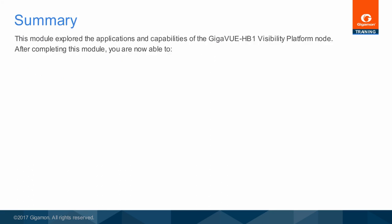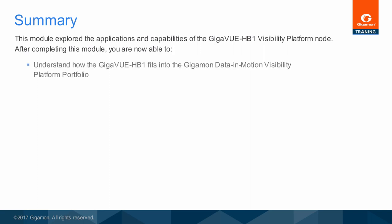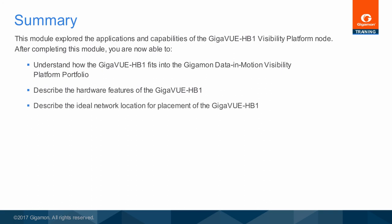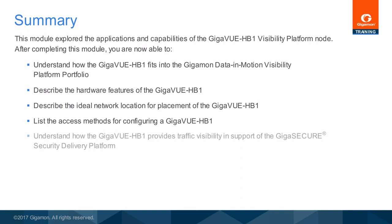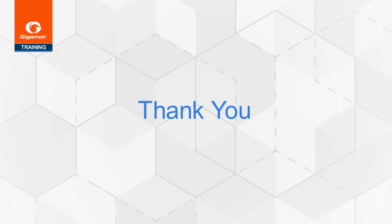This module explored the applications and capabilities of the Gigaview HB1 Visibility Platform node. After completing this module, you are now able to understand how the Gigaview HB1 fits into the Gigamon Data in Motion Visibility Platform Portfolio, describe the hardware features and ideal network placement of the Gigaview HB1, list the access methods for configuring a Gigaview HB1, and understand how the Gigaview HB1 provides traffic visibility in support of the GigaSecure Security Delivery Platform. This completes the Gigaview HB Product Family Training Module. Thank you.